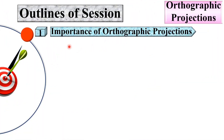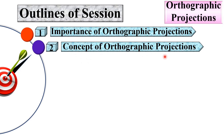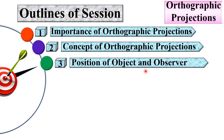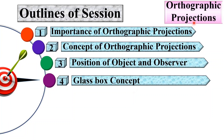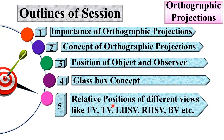Let us see first the outline of the session. First we will discuss the importance of orthographic projections, then the concept of orthographic projections, then the position of object and observer, next the glass box concept of orthographic projections, and finally the relative positions of different views like front view, top view, left hand side view, right hand side view, bottom view, etc.